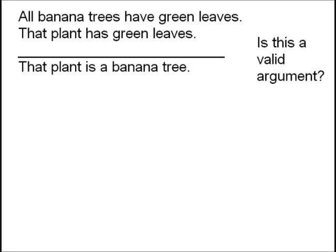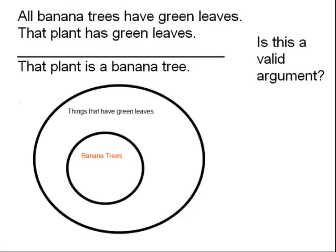Now let's see how an Euler diagram can show that an argument is invalid. All banana trees have green leaves. That plant has green leaves. So that plant is a banana tree. Is this valid?